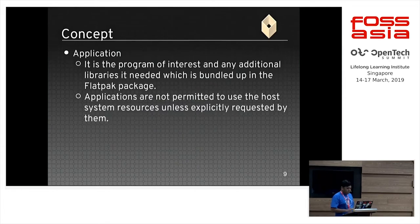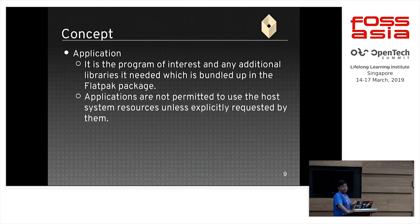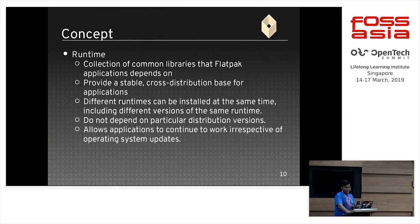An application is any program of your interest, and any additional libraries it needs are bundled in the Flatpak package. Applications are not permitted to use host system resources unless explicitly requested. Applications can request different permissions, and based on these permissions, the host system resources can be used — like audio or a filesystem mounted on a different partition. You just need to add the respective snippet into the manifest file. The manifest file is what you write so that you can build the application.